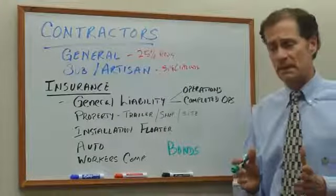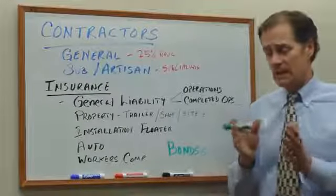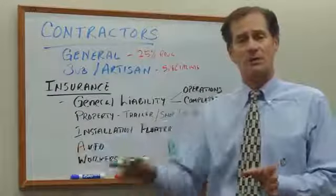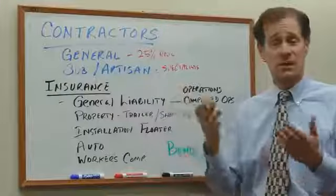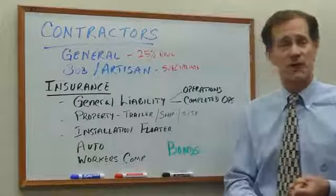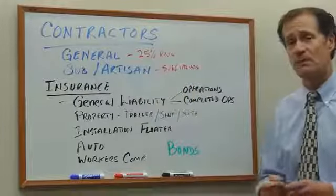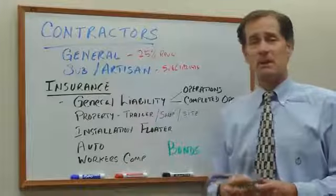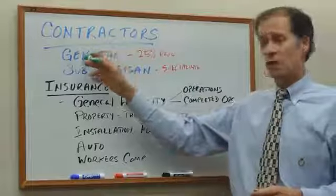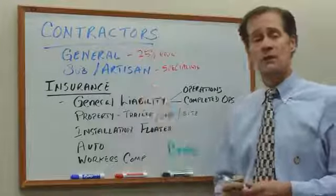Contractors, broadly speaking, in the insurance world break down into two categories. One is what we call general contractors — that would be any contracting operation where greater than 25% of your revenues are paid to others, that is to specialists. Who are those specialists? Subcontractors or artisan contractors — electricians, plumbers, HVAC, drywall, painting, roofing, and so forth. Generally speaking, for a company with, say, a million dollars of revenue and five employees, a general contractor is going to pay 25% to 50% more for insurance than the artisan contractor.